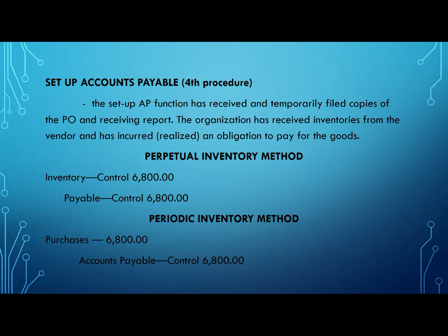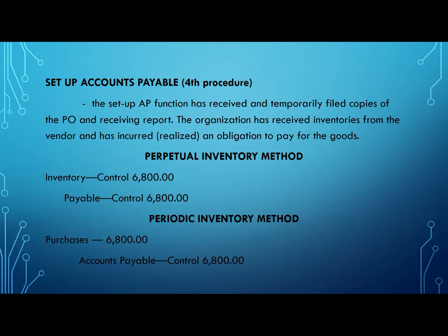Set up Accounts Payable. An accounts payable system pays the bills of a business in an organized manner. The goals of this system are to make payments in a timely manner and to pay the correct amounts to the correct supplier. Steps include: select software, set up supplier, enter invoices, approve invoices, prepare and schedule payment, test a check run, and sign checks. In the perpetual inventory method, debit inventory control and credit accounts payable control. In the periodic inventory method, debit purchases and credit accounts payable.